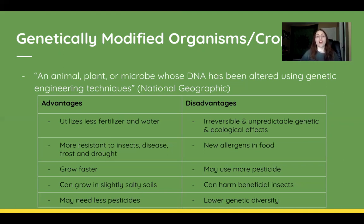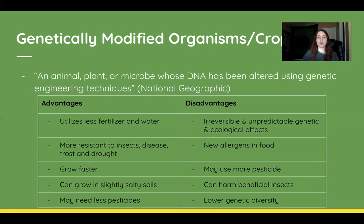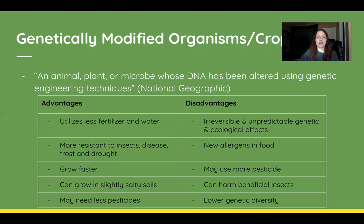Another huge advantage is that GMOs are more resistant to insects, disease, frost, and drought. This means they can be grown in new circumstances that previously wouldn't occur naturally, allowing more food to be supplied to developing countries — and they also grow faster, increasing food abundance.